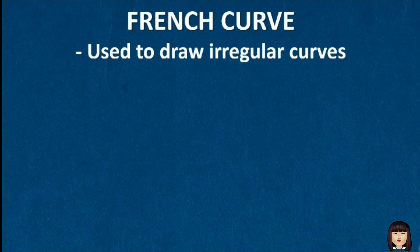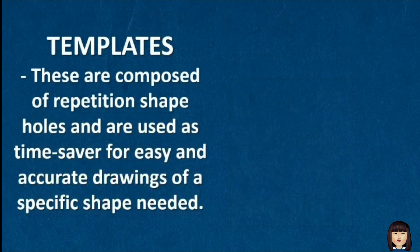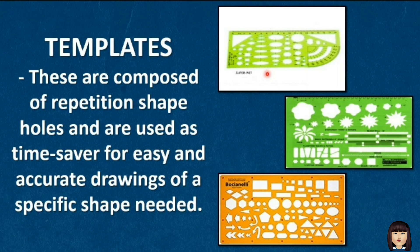The French curve is used to draw irregular curves. The templates are composed of repetitions of shapes and holes that are used as a time saver for easy and accurate drawings of a specific shape needed. As you can see, there are different holes in these templates — you can use them for architectural drafting, including wall thickness, and they also feature circles from smallest to biggest size.